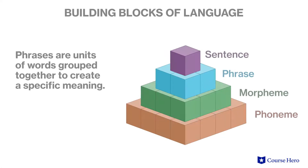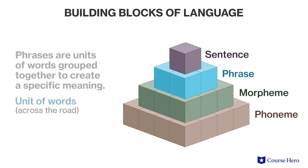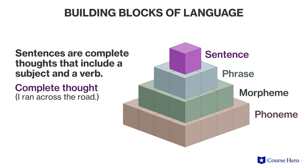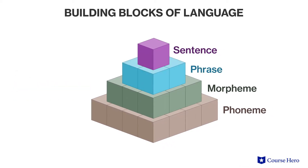Next are phrases, or units of words grouped together to create specific meaning. And sentences, complete thoughts that include a subject and a verb. Both phrases and sentences rely on units of grammar in order to create meaning.